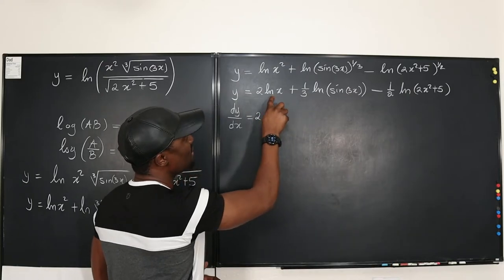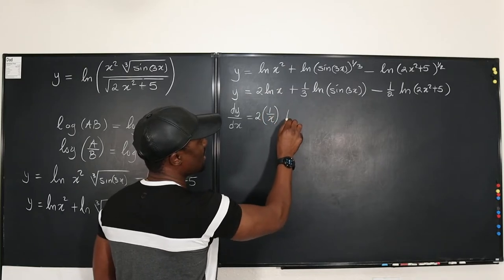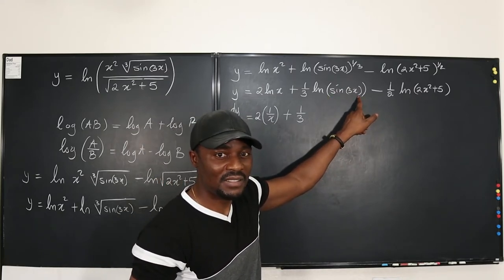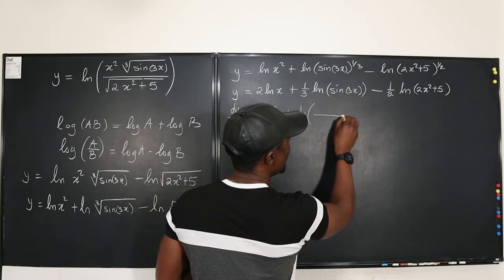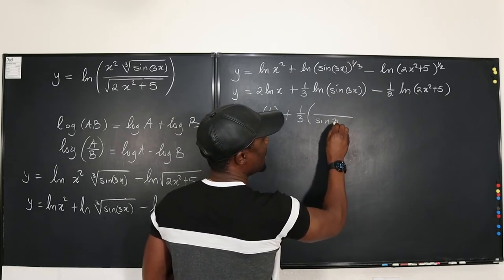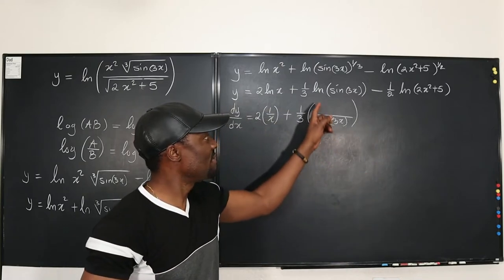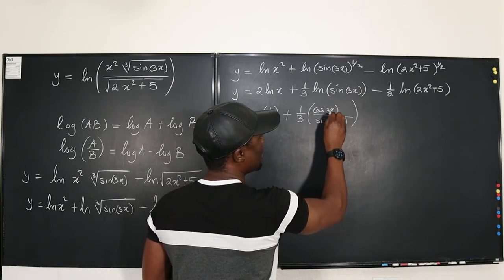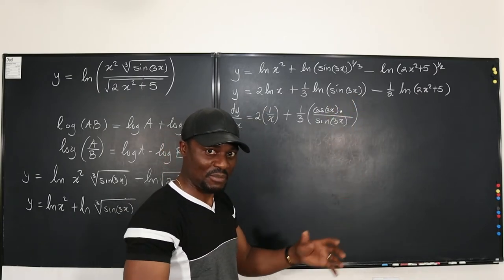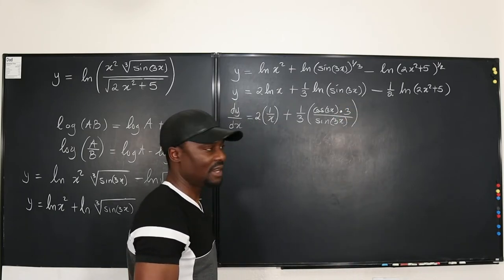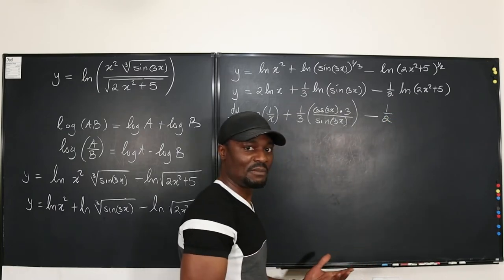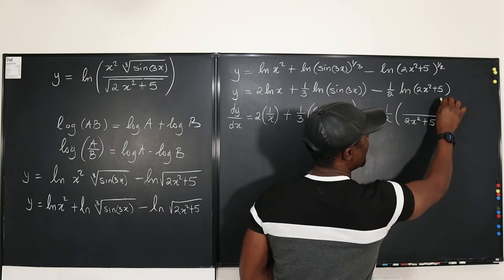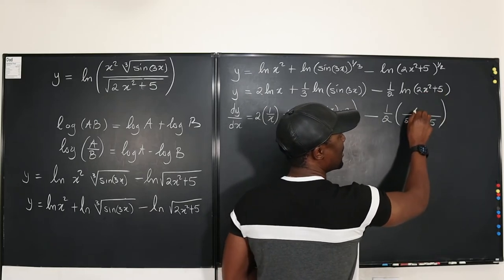Applying this back to our problem: the derivative gives 1 over x, plus keeping the constant one-third, the derivative of ln(sine 3x) is the derivative of what's inside over what's inside — so something over sine 3x. The derivative of sine 3x is cosine 3x times 3 by the chain rule. Then for the last term, it's one-half times 4x over 2x squared plus 5, since the derivative of 2x squared plus 5 is 4x.